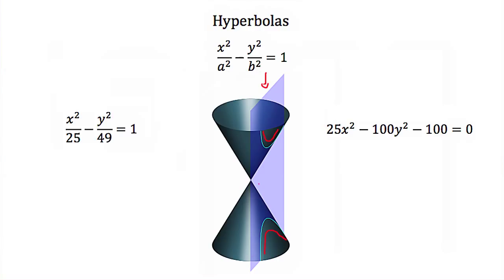Any hyperbola that has its center at the origin can be written in standard form as x squared over a squared minus y squared over b squared equals 1. An example written in standard form would be x squared over 25 minus y squared over 49 equals 1. An example not in standard form would be 25x squared minus 100y squared minus 100 equals 0.